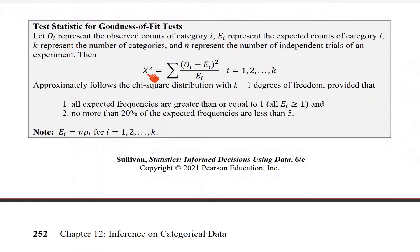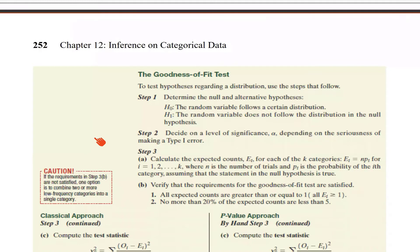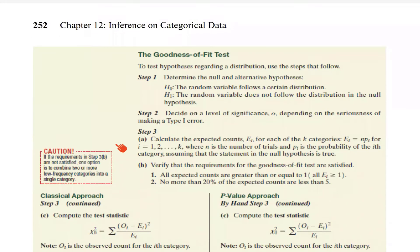This chi-square test statistic approximately follows the chi-square distribution with k minus one degrees of freedom, provided that all expected frequencies are greater than or equal to one, and no more than 20 percent of the expected frequencies are less than five. The expected frequencies are computed as n times p for that particular category.